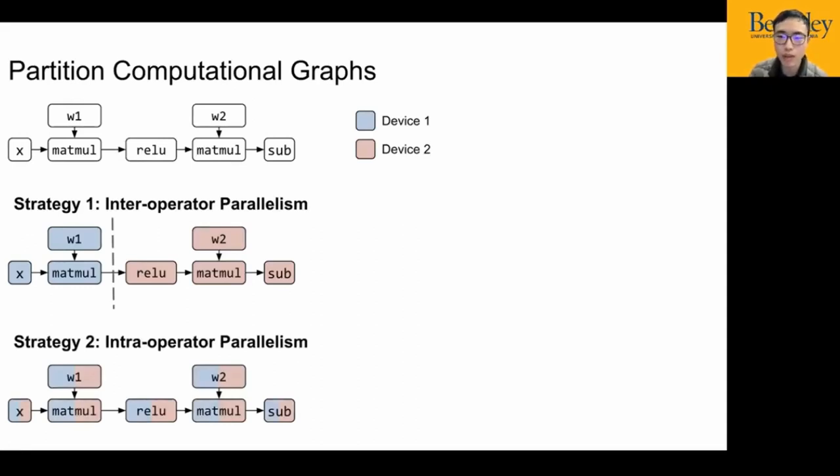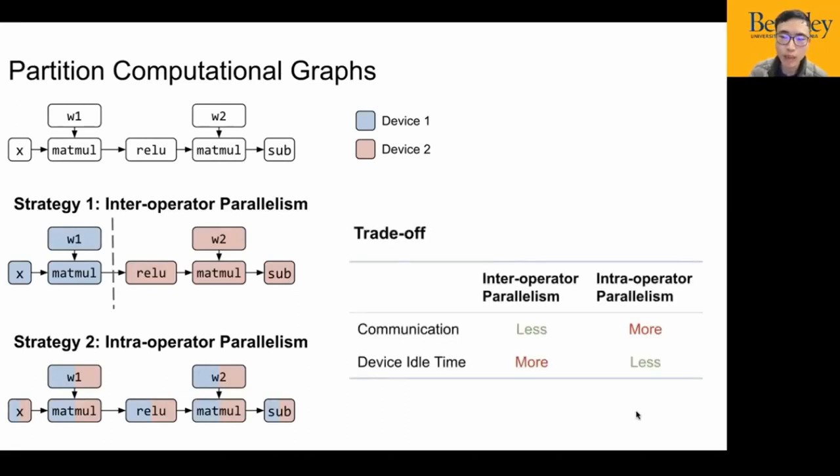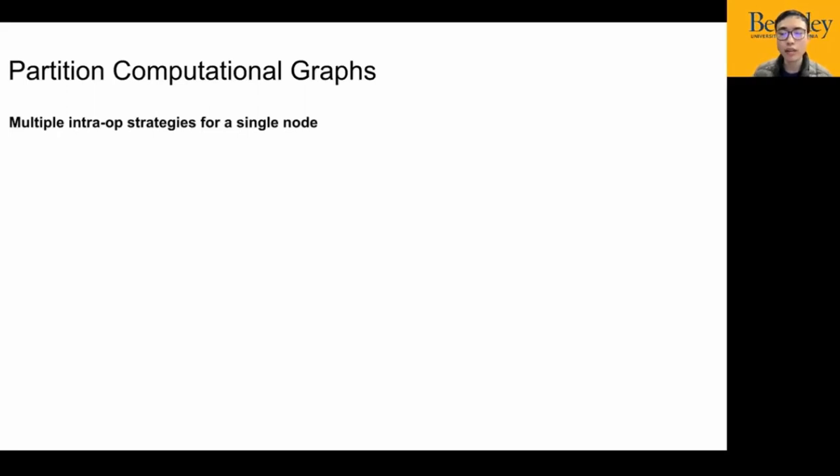Now, if we want all devices to always be busy, what should we do? Instead of partitioning at graph level, we can partition each operator. We can partition each operator and let different devices work on different regions of the same operator. This makes all devices busy, but it leads to more frequent communication because the devices have to sync after one operator if the next operator cannot preserve the previous partition. In summary, this page shows two basic patterns of partitioning a graph. As I've just mentioned, there are trade-offs between these two methods.